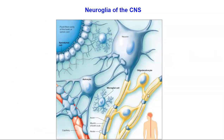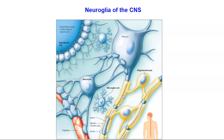Let's review the types of cells in the central nervous system. We have the ependymal cell, which secretes and monitors the spinal fluid. We have microglial cells — the little ones — which phagocytize pathogens and cellular debris. We have the oligodendrocyte, responsible for myelinating the axons of neurons. And we have the astrocyte, which connects to capillaries and neurons and performs the functions of the blood-brain barrier.